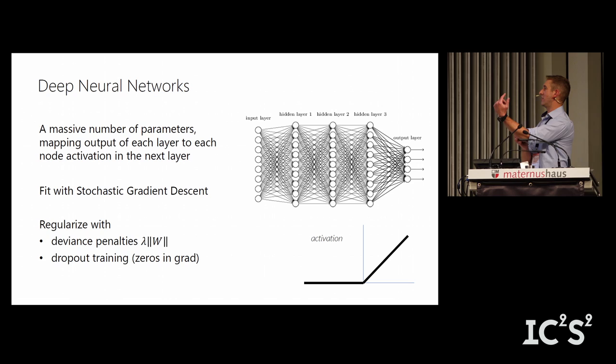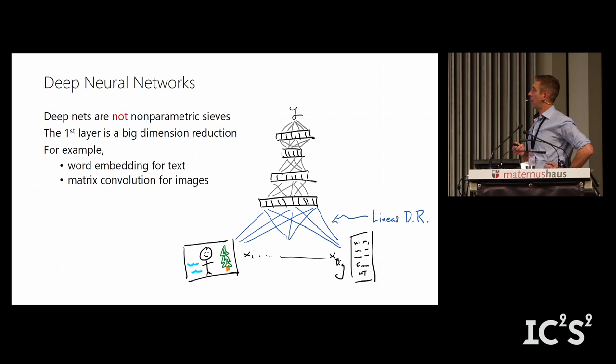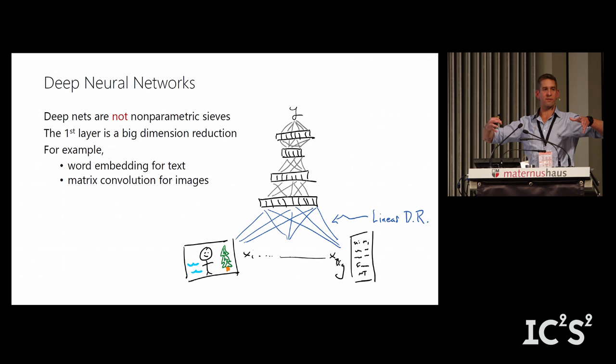What is a deep neural network? Briefly: lots of connections, lots of nodes. There's a ton of hype. Really, what they are is just fast and cheap — there's no magic to them. For econometricians in the room: deep nets are not nonparametric, which is a real misconception. They're semiparametric because they involve a massive dimension reduction at the first layer.